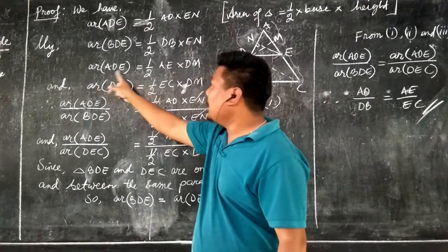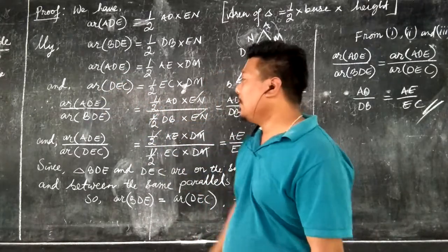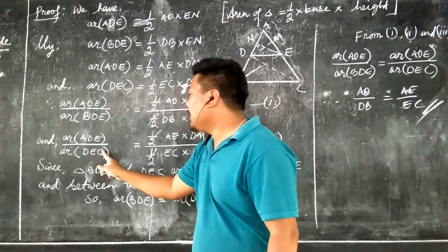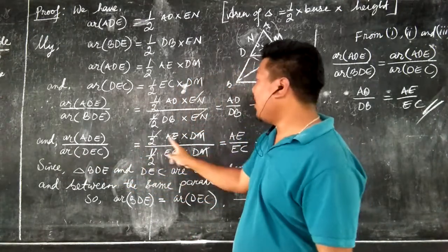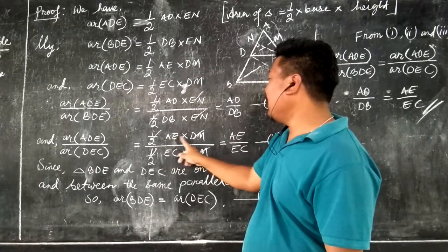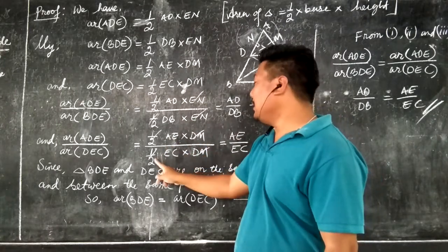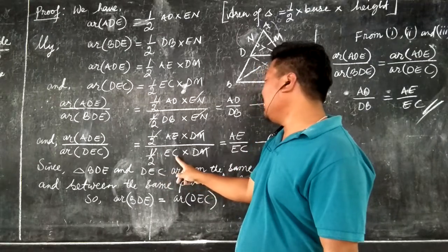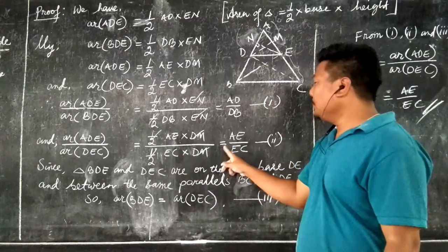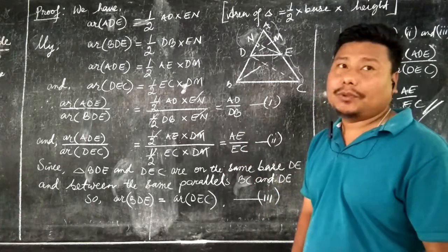Similarly, let us divide area of triangle ADE by area of triangle DEC. Area of triangle ADE is equal to half into AE into DM, and area of triangle DEC is equal to half into EC into DM, which gives us AE by EC. Let us mark this as Equation 2.